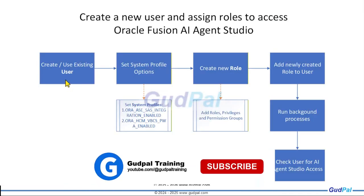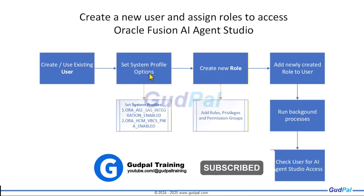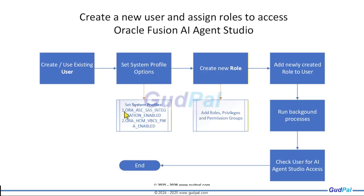Going back to the flowchart: first step is to create a user, next step is to set certain profile options — ORA_ASE_SAS_INTEGRATION_ENABLED and ORA_HCM_VBCS_PWA_ENABLED. These two profile options need to be set, and then we create a new custom role.